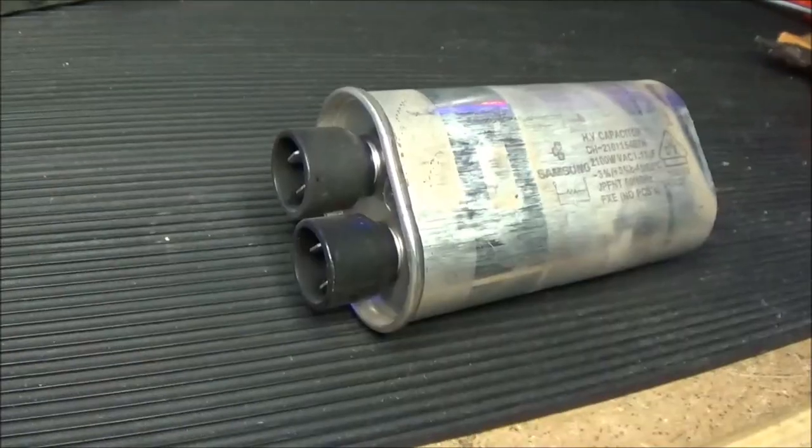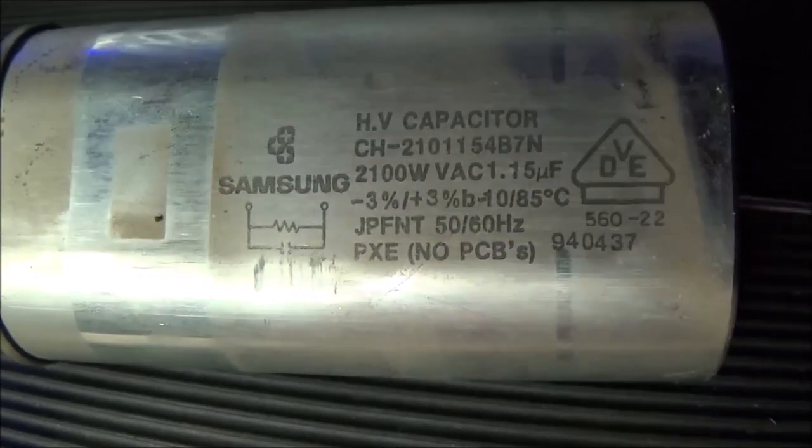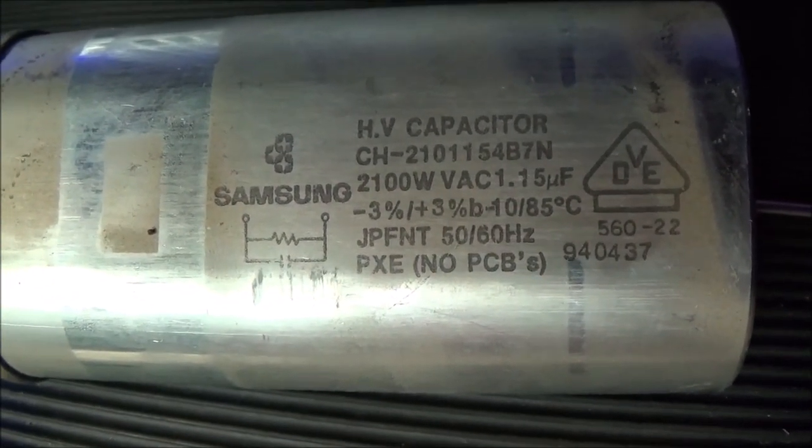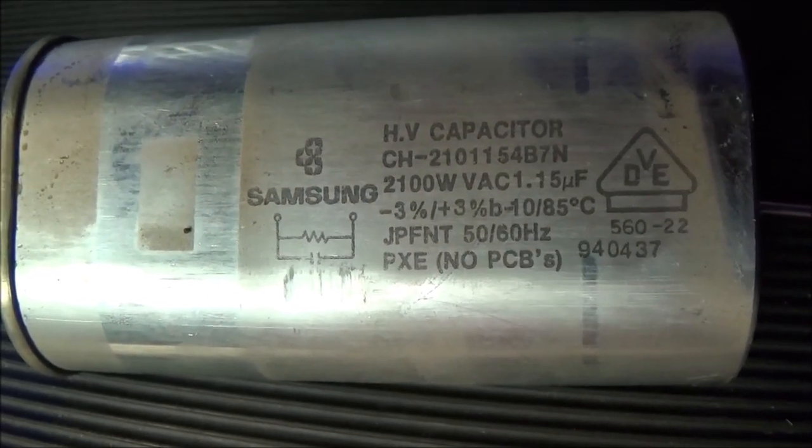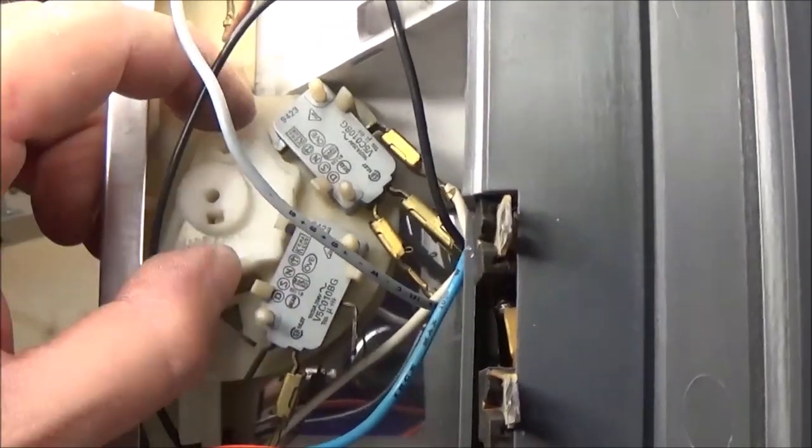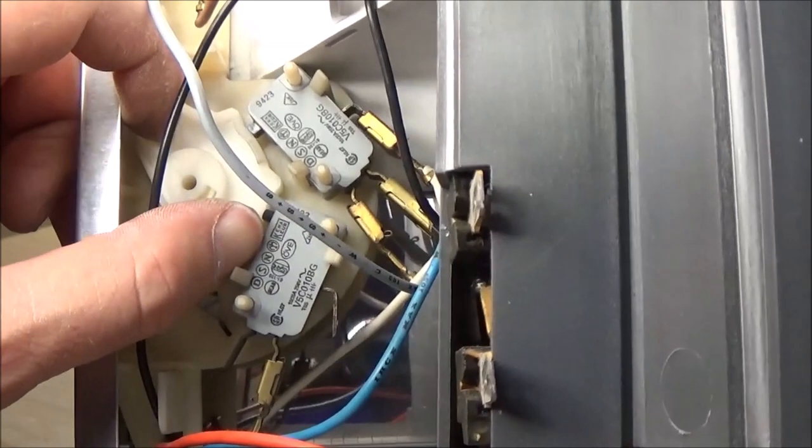And this is the big capacitor. This is a Samsung capacitor with 2 kilowatts of power, 1.15 microfarads. And on the lateral side we have the mechanism that is responsible for the control of the oven.